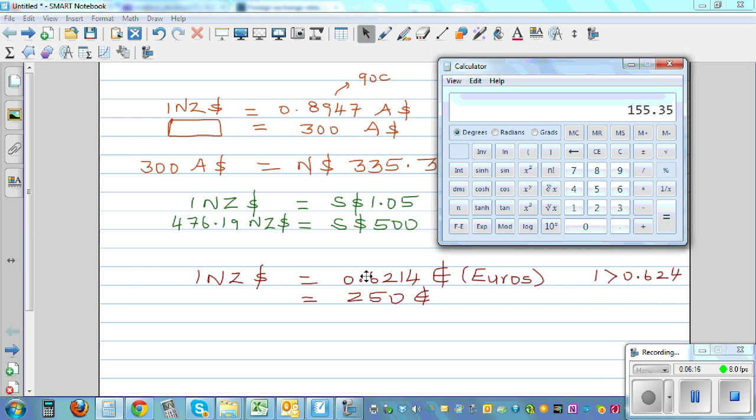So when you're dividing by a decimal between 0 and 1, the number becomes bigger. And if you're multiplying, the number becomes smaller. So if you divide 250 by 0.6214, the number is...